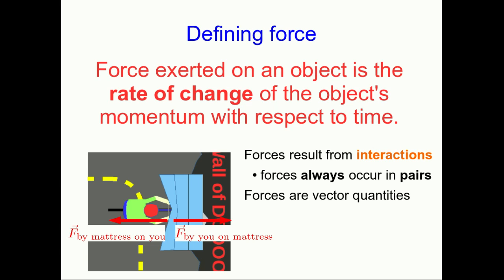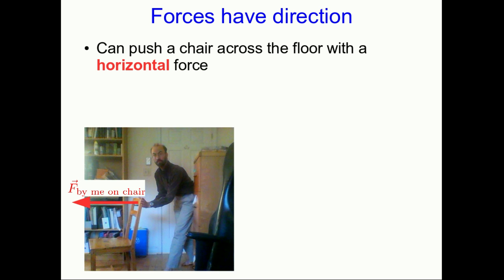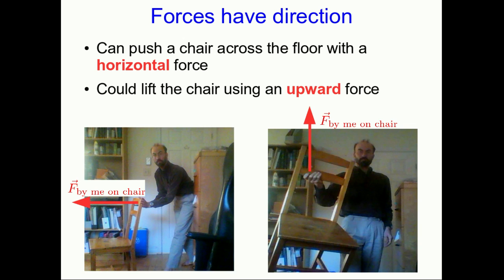Also, forces are vector quantities. They must be because they're related to a change in momentum. And your change in momentum during the collision with the wall is a vector. We can see that forces are vectors intuitively because they have direction and magnitude. I can push a chair across a floor by exerting a force on it horizontally. But if I exert a rather similar force upward, I can lift the chair. So the effect of a force depends on the direction it's exerted.